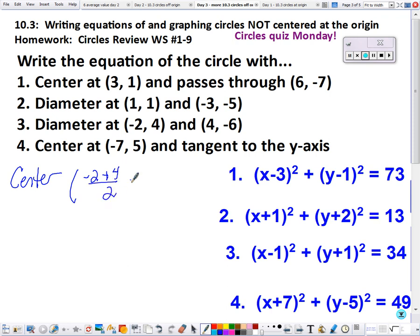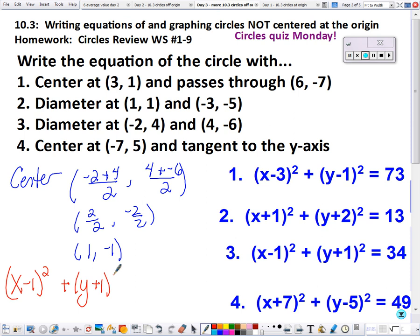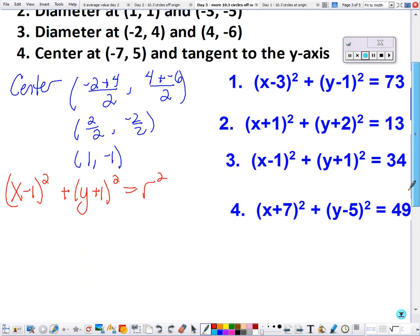We're going to add the x values and divide by 2, add the y values and divide by 2. And our center is at (1, -1). We get (x - 1)² plus (y - (-1))² equals r squared, and then let's pick a point to plug in.